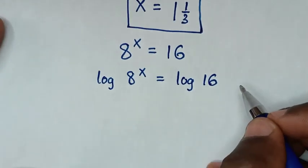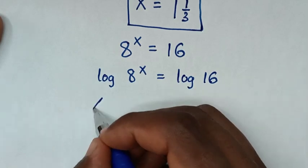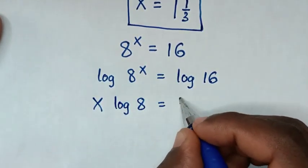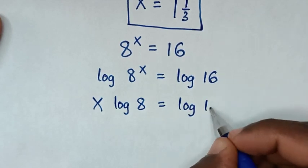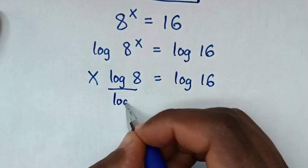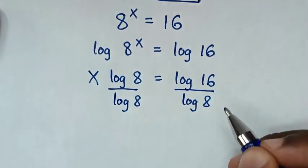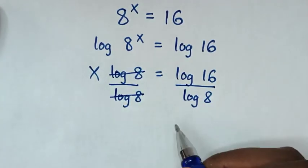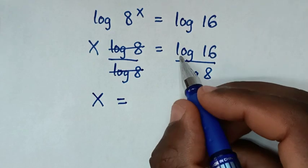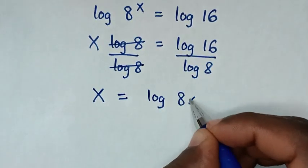In the next step, this power of x will move to the front, so it will be x log of 8 is equal to log of 16. Then we divide by log of 8 on both sides, so the log of 8 terms will cancel, giving x is equal to log of 16 over log of 8.